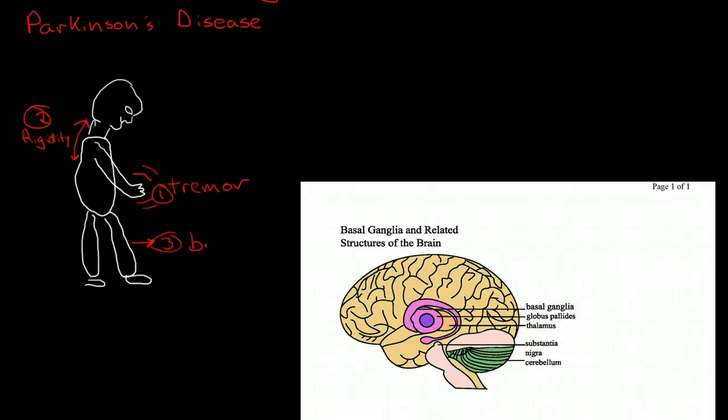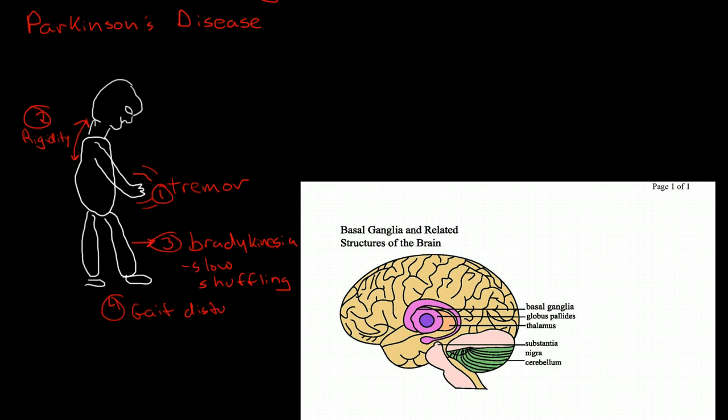The rigidity together with the bradykinesia gives them the slow shuffling gait that you see with patients with Alzheimer's disease. And then just gait disturbances in general, so they're having trouble walking. Those are the four defining features of Parkinson's disease.